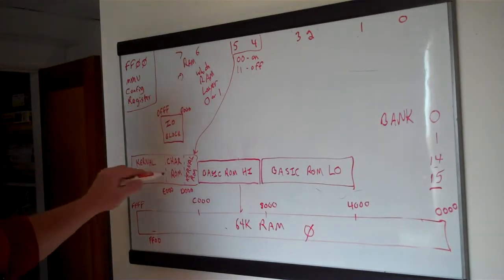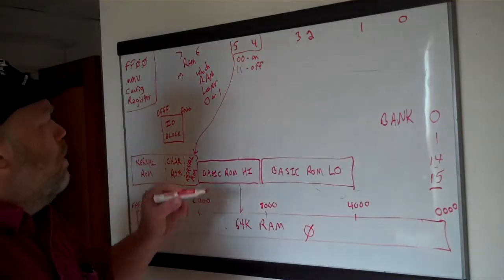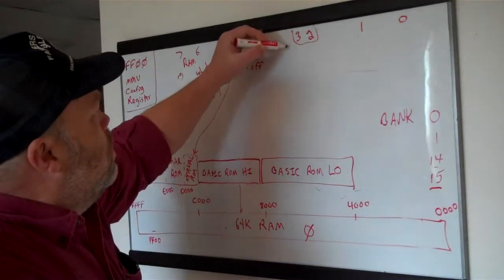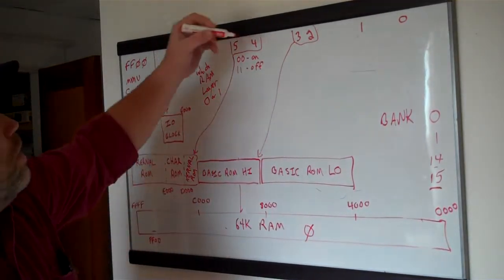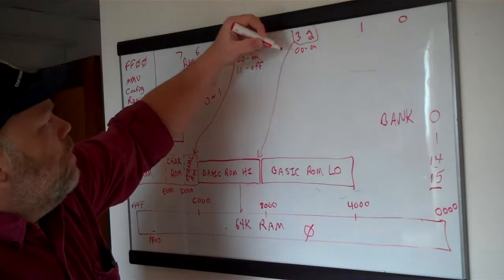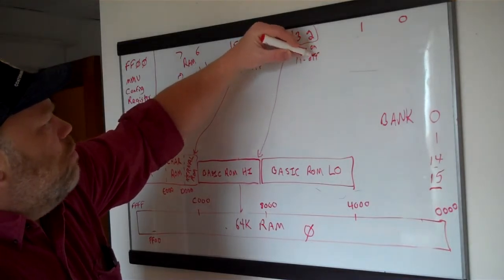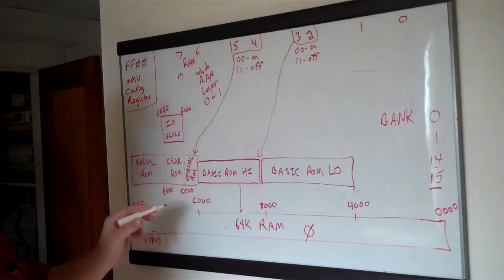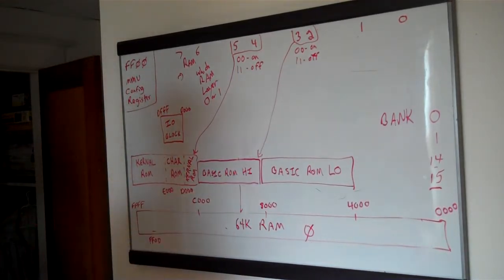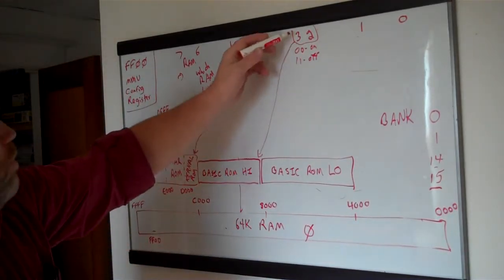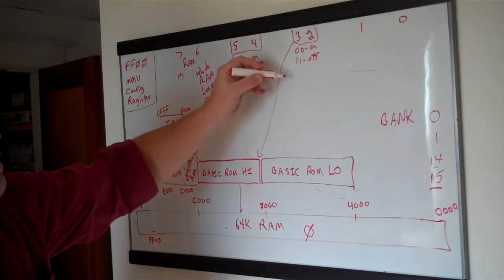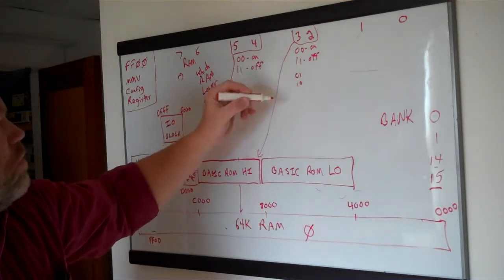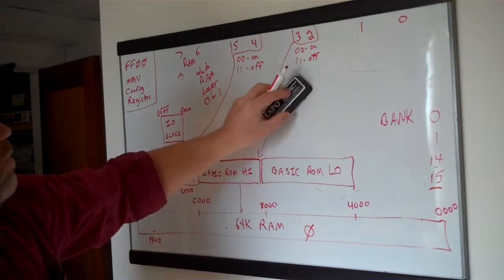Bits 2 and 3 work the same way for Basic ROM High. Again, 00 means it's on and 11 means it's off. That part of BASIC can be turned on or off with those two bits. This address range was also a space where an internal or external function ROM could be plugged in, and you'd use 01 or 10 for those options — but we're going to ignore that.